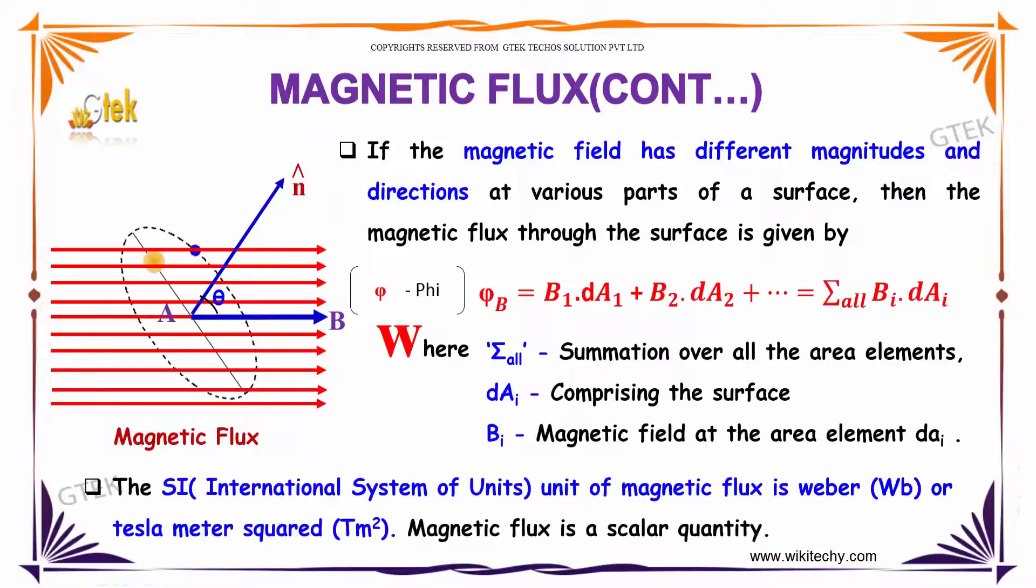If the magnetic field has different magnitudes and directions at various parts of a surface, then the magnetic flux through the surface is given by phi_B equals B1·dA1 plus B2·dA2 plus B3·dA3, and so on. On the whole, it is the summation of Bi·dAi.